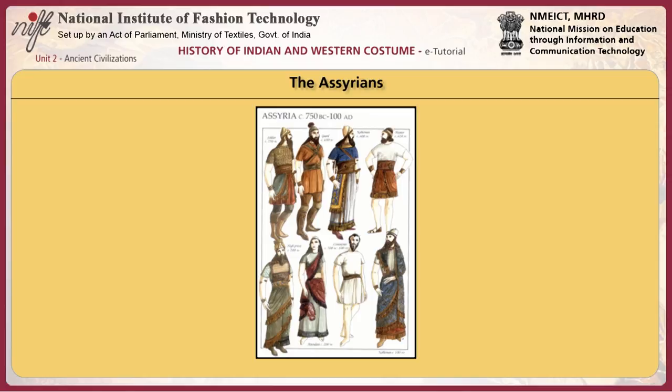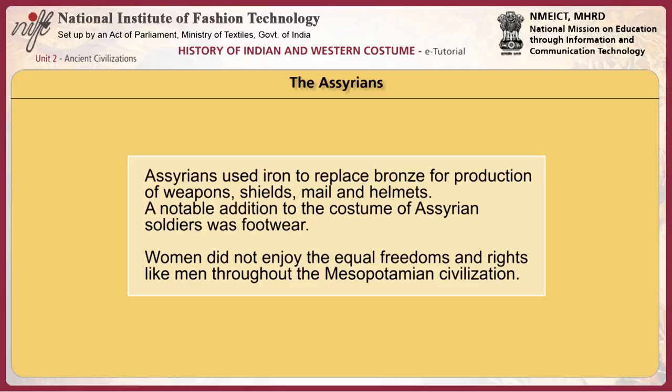The apron had a curved hem on one side and a straight hem on the other. The king's diadem was a truncated conical hat made of felt and decorated with gold bands. Assyrians used iron to replace bronze for production of weapons, shields, mail and helmets. A notable addition to the costume of Assyrian soldiers was footwear — several varieties of shoes ranging from sandals to boots were designed for the military and royalty.